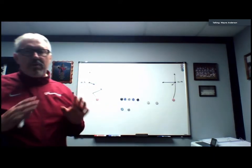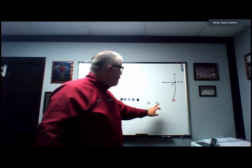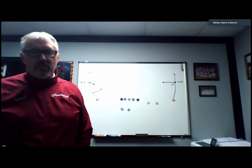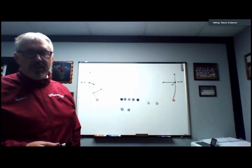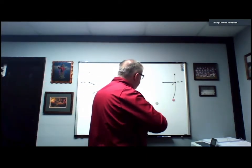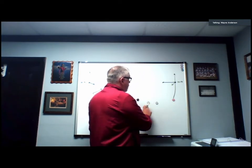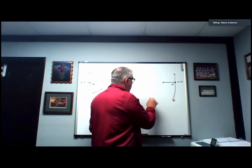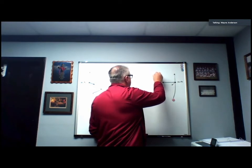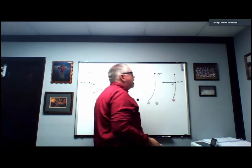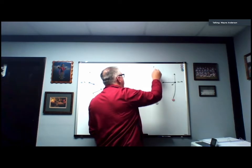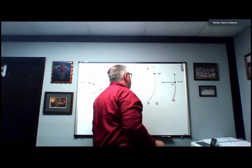Whether it's divide or divide special, backside two's alignment is exactly the same — he is on the college hash mark, or for high school coaches, two yards inside the high school hash mark. With divide special, backside three is now running the streak read. He works up the field along the high school hash mark until he gets to his landmark at 15 yards, where he decides to go vertical upfield or break the post route.